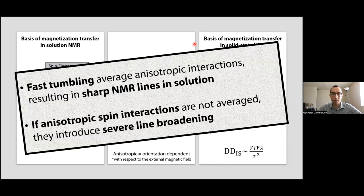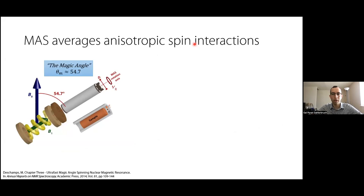However, these anisotropic spin interactions can be averaged by spinning the solid sample very fast in the rotor at an angle of 54.7 degrees with respect to the external magnetic field. That angle is called the magic angle, and therefore the method is called magic angle spinning NMR.